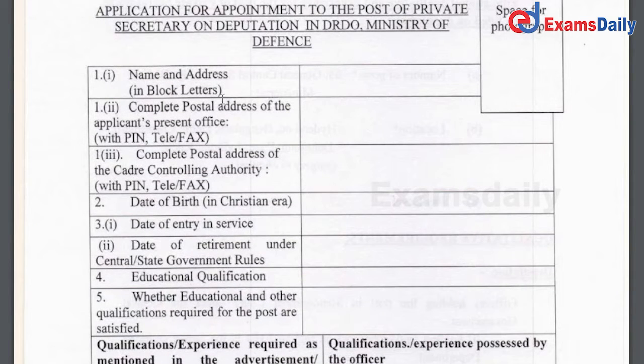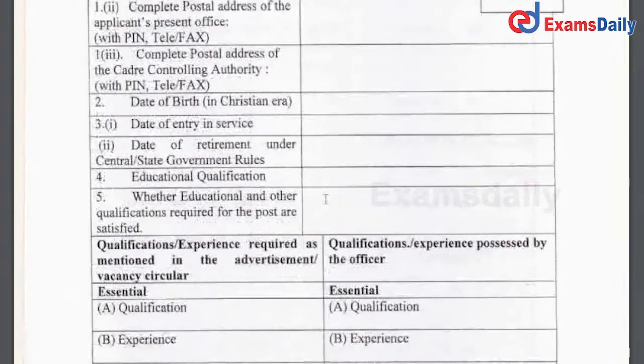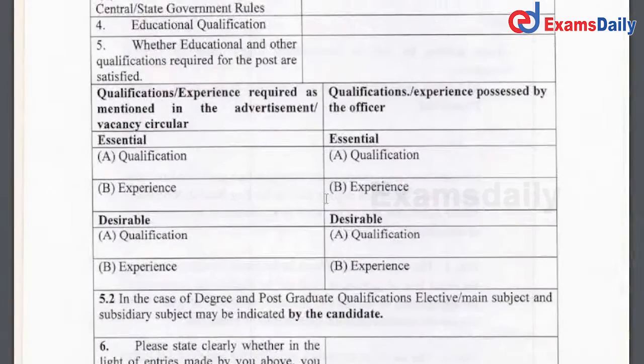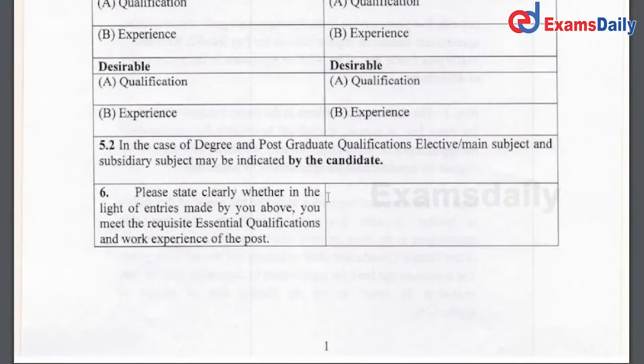There is a name and address. There is a complete postal address. There are many details including date of birth, age, etc.